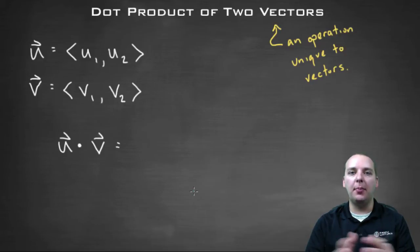But here dot product only makes sense when you're talking about vectors. There's no way to take the dot product of two and nine, or numerical values like that. So this is an operation that's unique to only vectors. So here's how it works.